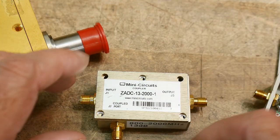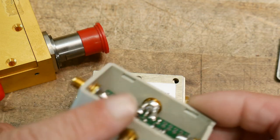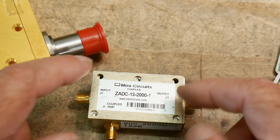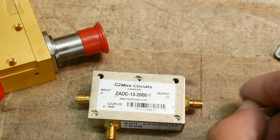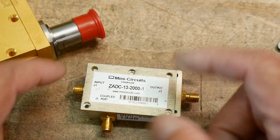This is a coupler. I don't remember what the frequency range of this one is. This one is 800 to 2 gig and it's made by Mini Circuits and it is a coupler.